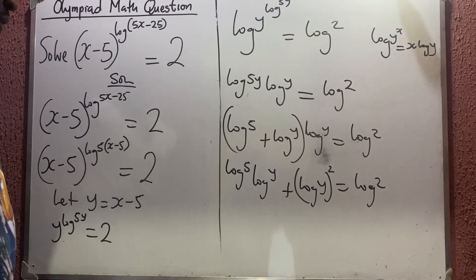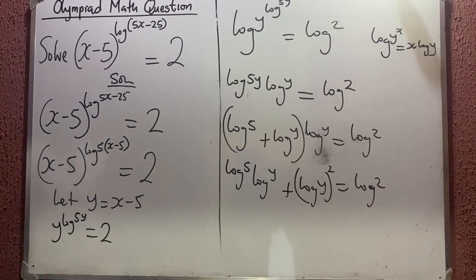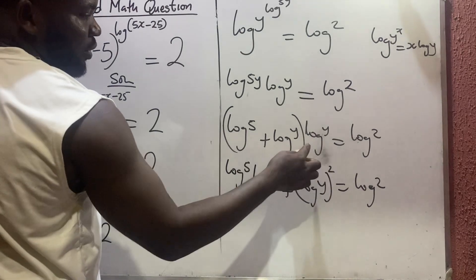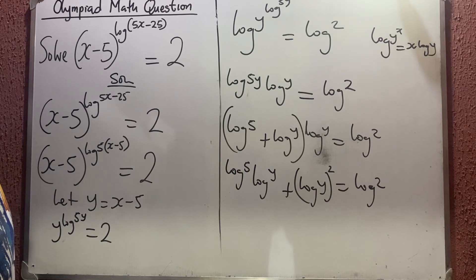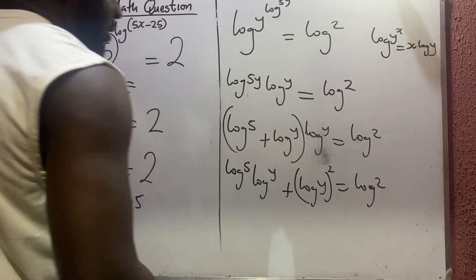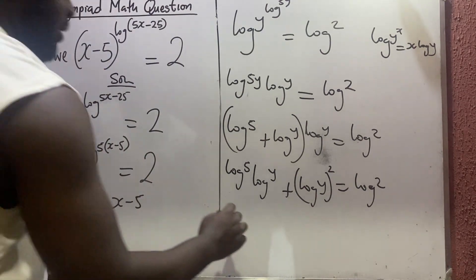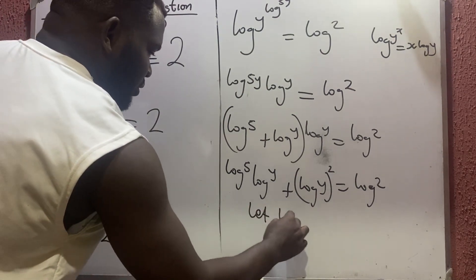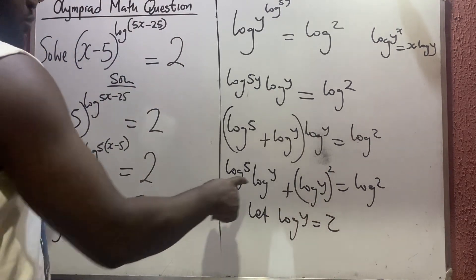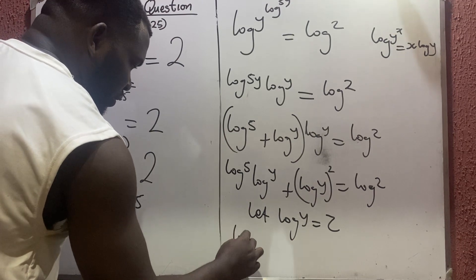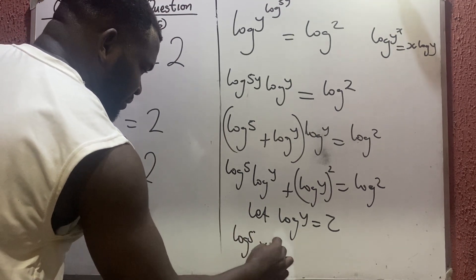So what do we do here now? Let us say that let log y be equal to z. So anywhere you see log y, we'll put z. I'm going to have log 5 times z.